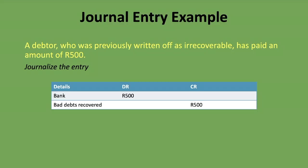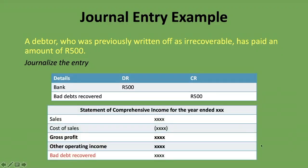Now we've recovered this bad debt — what if you are asked to do the statement of comprehensive income and you need to take it into account? Here is where it would go: you have the statement of comprehensive income for the year ended, then you have sales, cost of sales, gross profit, and then other operating income — and that is where you can see bad debt recovered. It's an income account, so that is where we put the 500 rand. It doesn't go into the statement of financial position because it's an income account, and we record all income in the statement of comprehensive income.